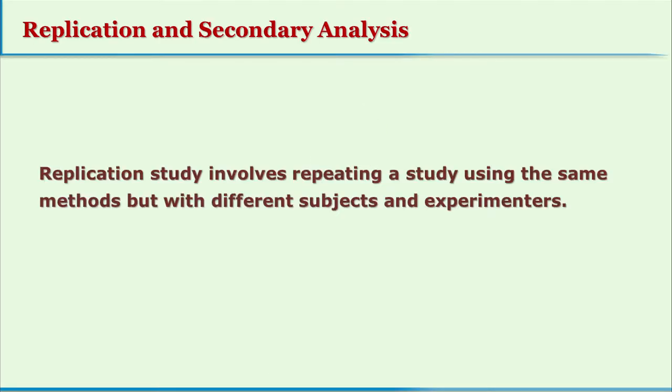Another type of evaluation study is replication and secondary analysis. As the name suggests, replication involves conducting the same study once again — the same experiment or survey is conducted again, but with different subjects or experimenters. The varying factors could be different situations or socio-economic conditions. The objectives are exactly the same, but they are tested with some other group, a different researcher, and different subjects on whom the study is conducted.